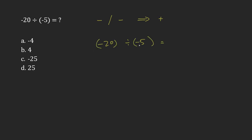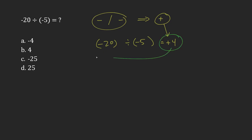20 divided by 5 is 4, and the result is positive because both signs were the same. So my answer here is B, 4.